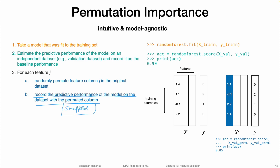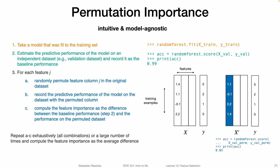We then record the predictive performance of the model on the dataset with the permuted column. Using the same random forest model, we compute the performance on the permuted dataset and get, let's say, 85% accuracy — compared to 99% before. Then in step C, we compute the feature importance as the difference between the baseline performance and the performance on the permuted dataset: 0.99 minus 0.85 equals 0.14. This is our feature importance for feature one.